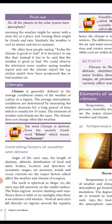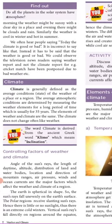Next, let us see what is climate. Climate is generally defined as the average conditions of the weather of a place or a region. The average atmospheric conditions are determined by measuring the weather elements for a long period of time, which is usually 35 years. The elements of weather and climate are the same — but unlike weather, climate won't change. It will be fixed.